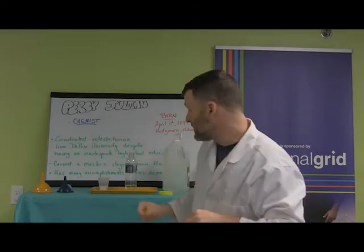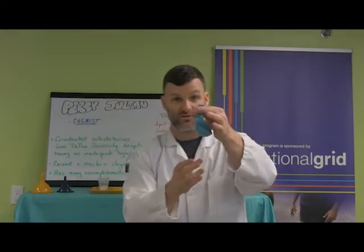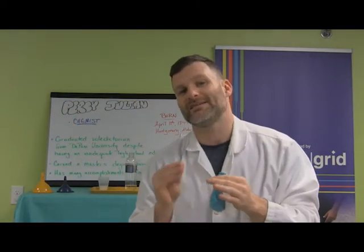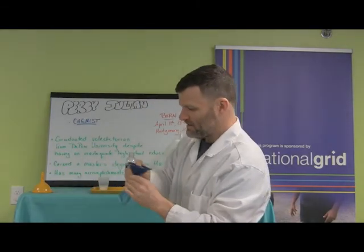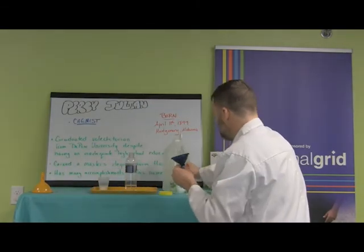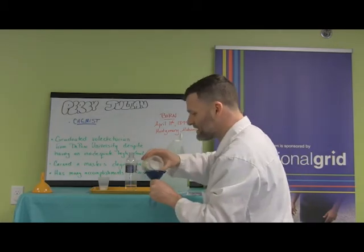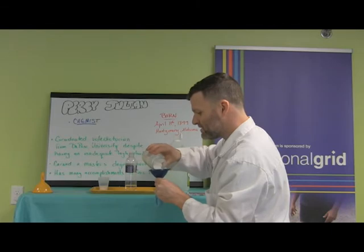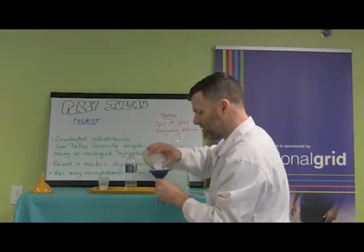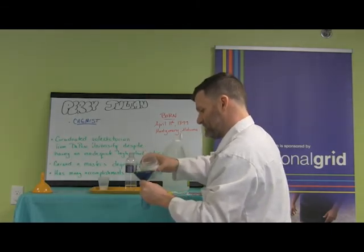Now, to get our baking soda in, we're going to put that inside of our balloon first, so that our reaction doesn't happen until we want it to. So I'll use a funnel just like I use with the vinegar. And I will pour some baking soda in here. Make sure it all goes in. We'll get a good amount.